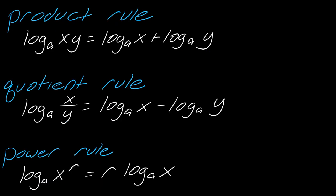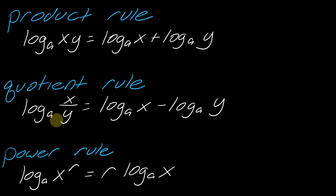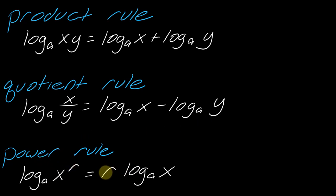The first three we're going to use quite a bit in this video. We have the product rule, which says if I have log base A of XY — so if I'm multiplying two things together — I can break these up using addition and keep the base the same. Then we have the quotient rule: log base A of X over Y can be broken up by subtraction. And finally, the power rule: if I have an exponent, I can bring it out in front.